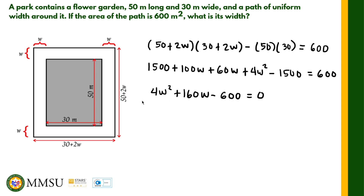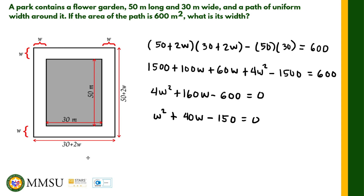We can divide all terms by 4 to simplify. 4w squared divided by 4 is w squared, 160w divided by 4 is 40w, and 600 divided by 4 is 150. So we have w squared plus 40w minus 150 equals 0, written in standard form. Let us check if it is factorable by looking at the factors of 150 — for example, 15 and 10 — but none add up to 40.